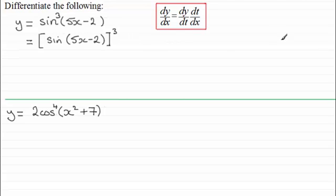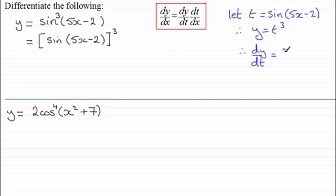I would encourage you to do this in your head, but for now I'm just going to write this down. Let t equal sin(5x-2). So we've got y equals t cubed. When it comes to dy/dt, we've got dy/dt is clearly 3t squared. So for dy/dx,